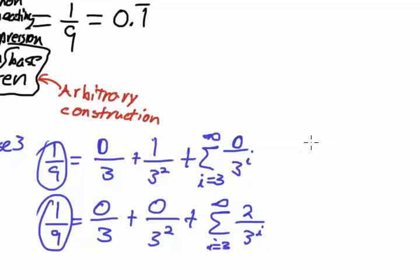This 1 ninth really represents the right side of 1 ninth. Whereas this side, this 1 ninth represents the left side.